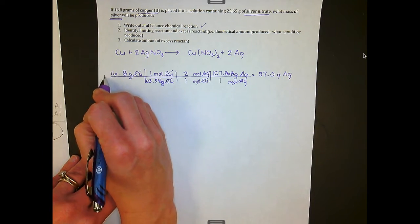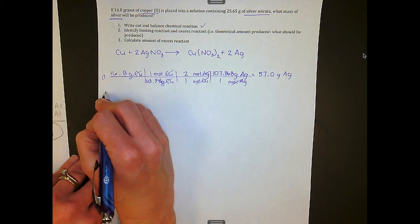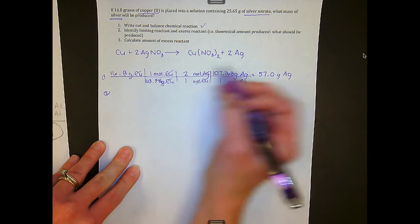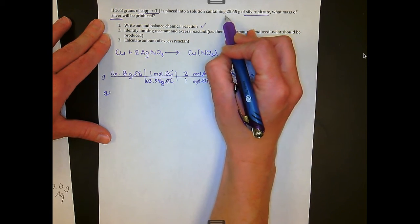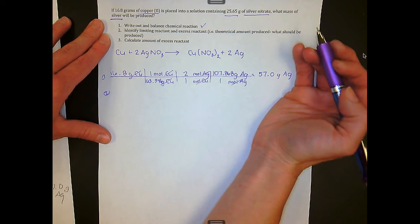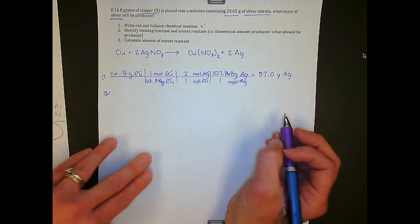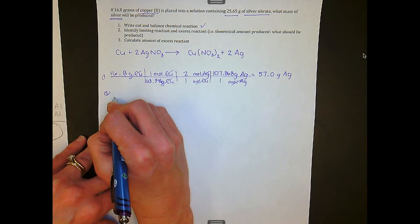That's our first possibility. The second comes from looking at the problem — it says 25.65 grams of silver nitrate. Let's see what happens if that reaction was allowed to go to completion and how much silver would be produced.